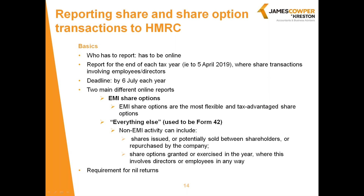The reports are required for the tax year rather than the accounts period end, so the deadline follows P11Ds — before 6th July each year. There are two different online reports: one for EMI (Enterprise Management Incentives) and one for everything else. EMIs are the most popular form of tax-efficient share option scheme. For EMIs you need to complete one form with separate forms; for anything else you need to complete the other form, which used to be known as a Form 42.